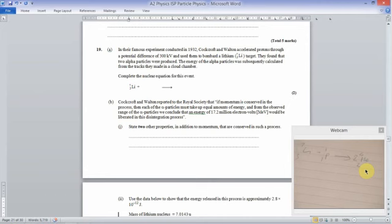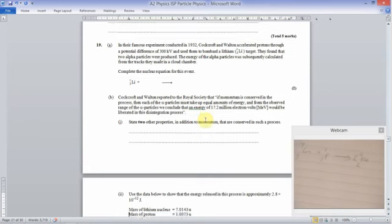State two other properties in addition to momentum that are conserved in such a process. The other idea that's conserved, you can't just say energy, you've got to say mass energy. Mass slash energy. Sometimes if you're lucky, they'll let you get away with just saying energy, but say mass energy. Because at the end of the day, mass is just stored energy. Say mass slash energy as one of the things that's conserved. And the other one is always charge.